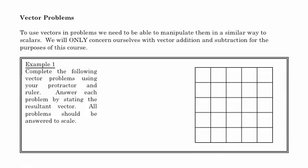Assuming that you have your protractor and ruler, we're going to look at a couple vector problems. Do not answer these questions algebraically because solving vector problems graphically is an important skill. Here's the first example: complete the vector problems using your protractor and ruler. Answer each of the problems by stating the resultant vector. We've got vector 1, and we're going to say it's a displacement vector, 4 centimeters north. Vector 2 is 2 centimeters east.